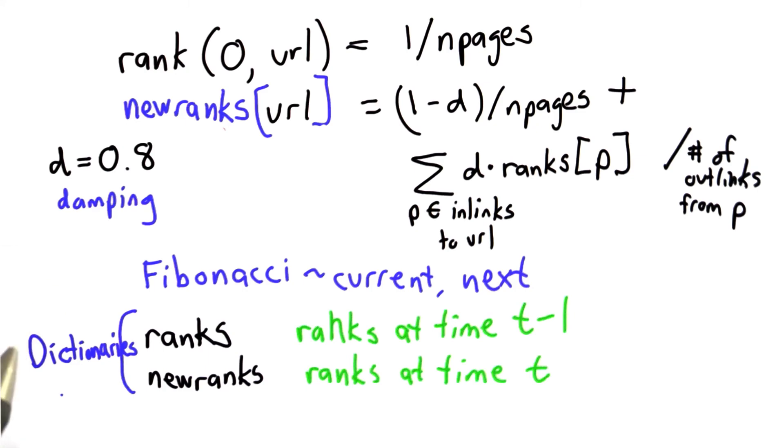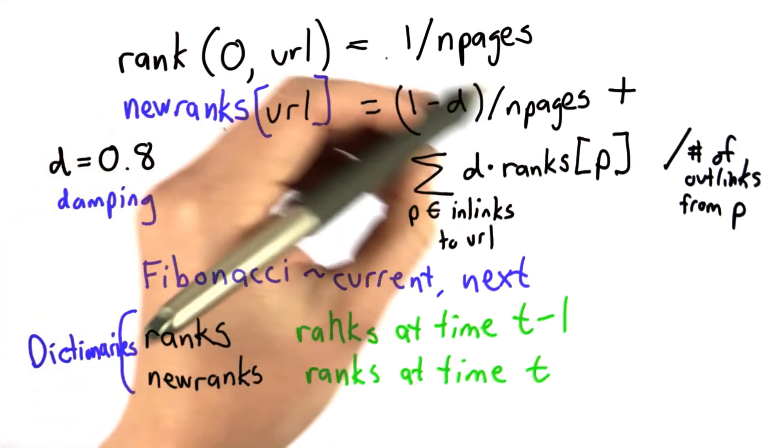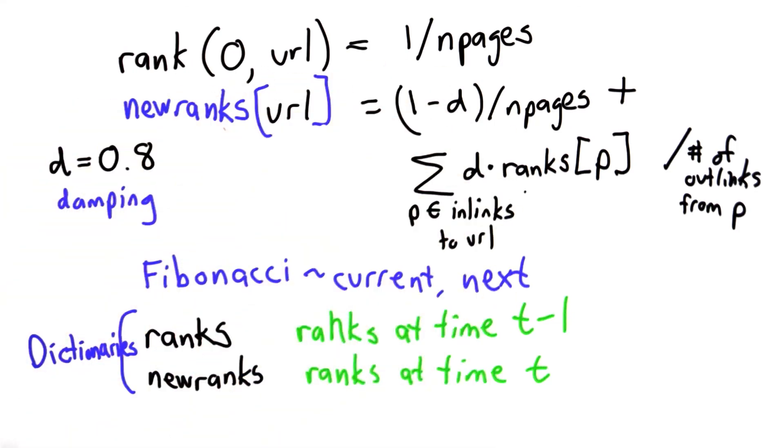So I think we're ready to start looking at the code. We've written this formula. It's still a mix of math and Python, but we're going to turn this into the code for computing the page ranks.